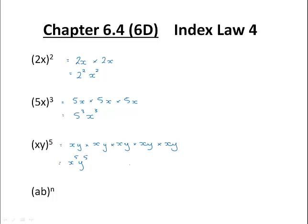In general, if we have more values inside a bracket, the power outside applies to everything in the bracket. So ab all to the power n would be the same as a to the n times b to the n. And this is our fourth index law.